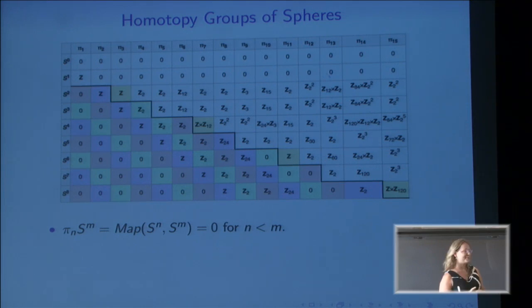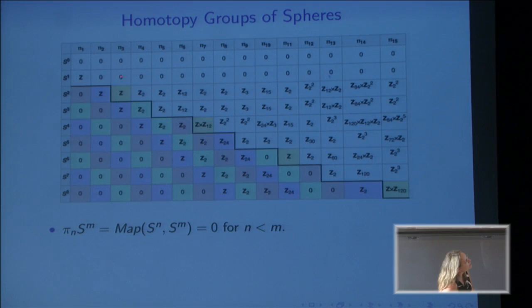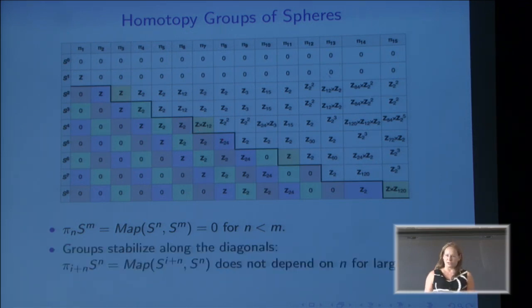The correct way to read this table is to read the diagonals. There's a bunch of first diagonals: 0, 0, but then there's a diagonal that consistently consists of Z's. What about the next one? It starts again very messily: 0, 0, Z, Z, but then there's a Z mod 2 that continues being Z mod 2. Let's go to maybe the purple one. 0, 0, Z mod 2, Z mod 12, Z times Z mod 12—that's really ugly, that's infinite—then there's Z mod 24 and that continues being Z mod 24. In fact, that is a general phenomenon.